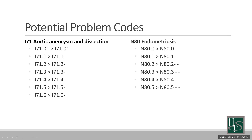Less frequently we will see aortic aneurysms and dissections and endometriosis, and there are a lot of code sets under those two categories but the changes are very similar when you look through each set. These are conditions that in our home health population we don't see as much as the ones on the previous slide.